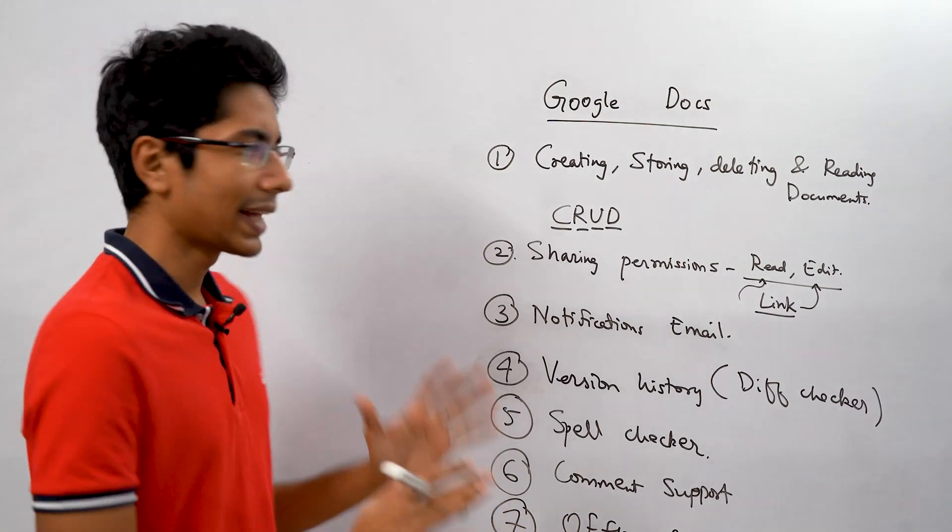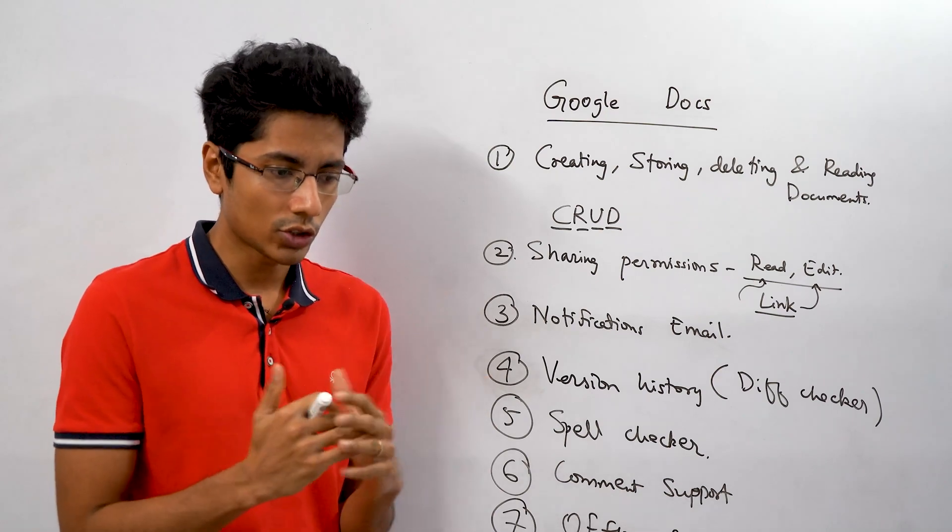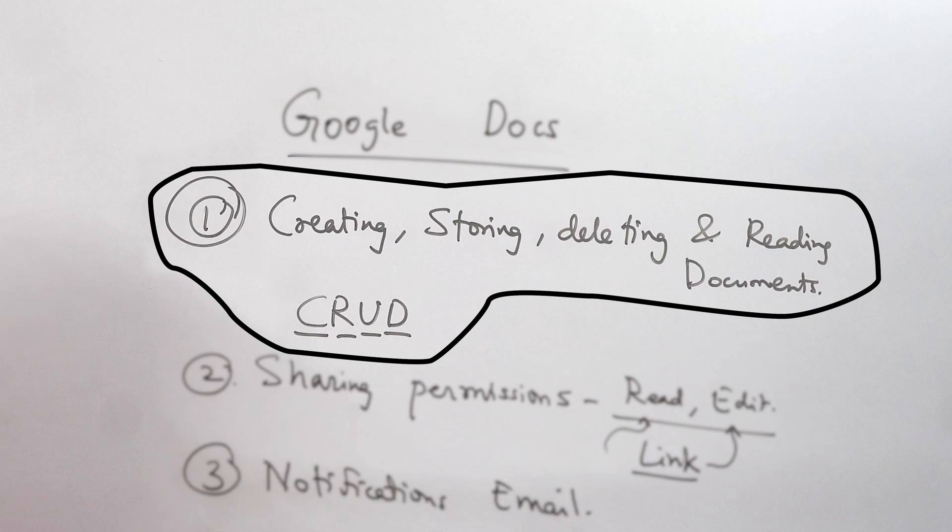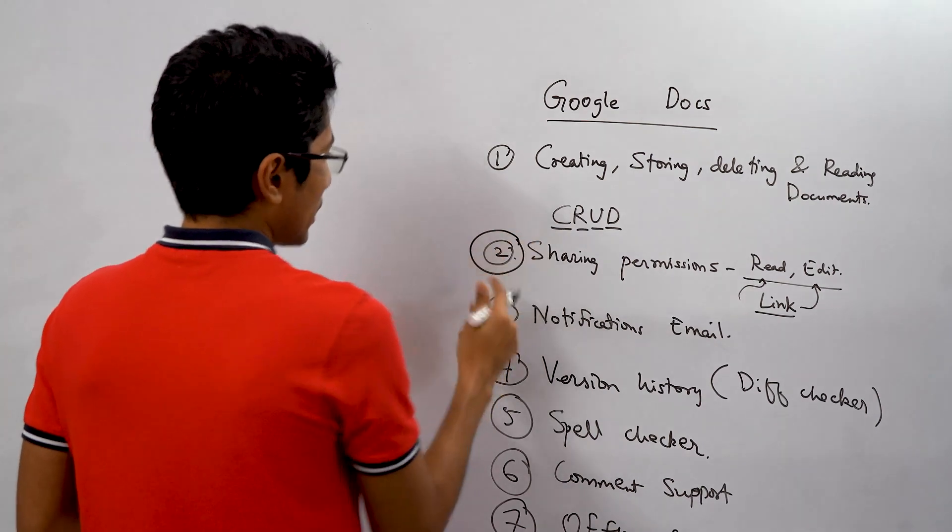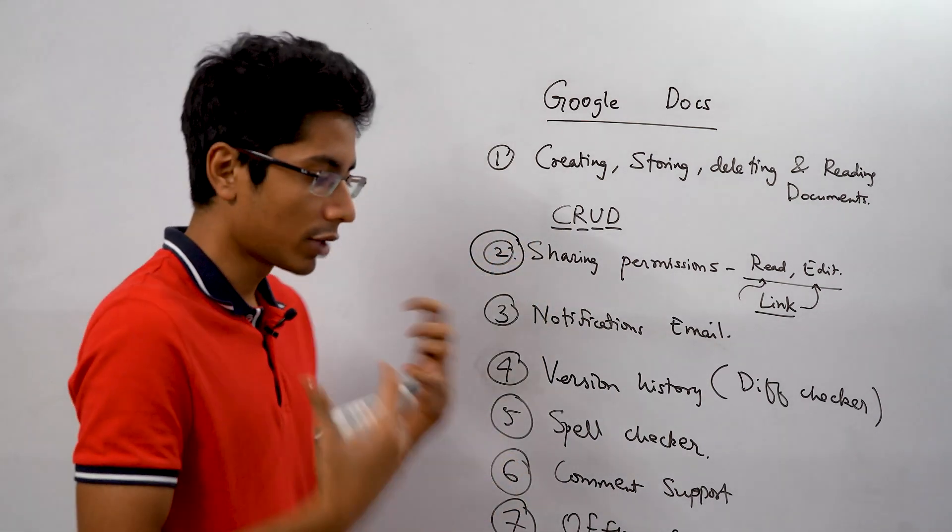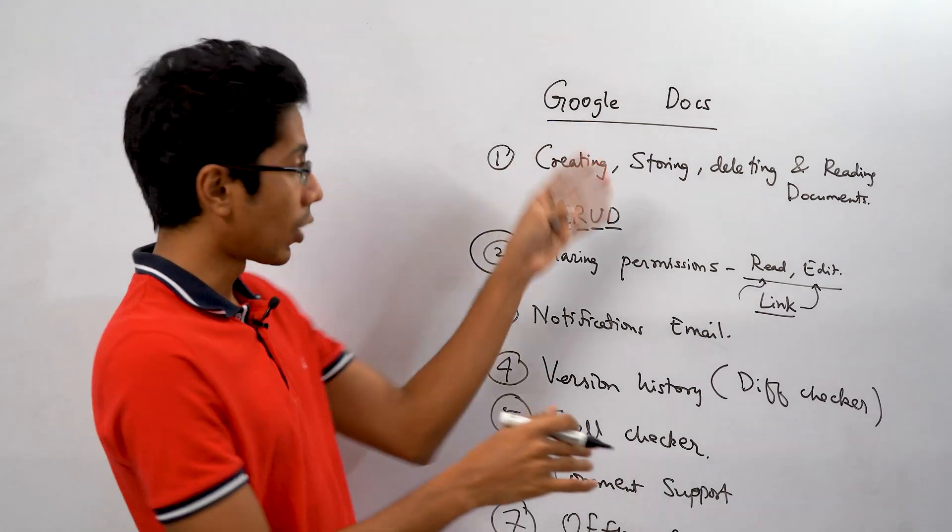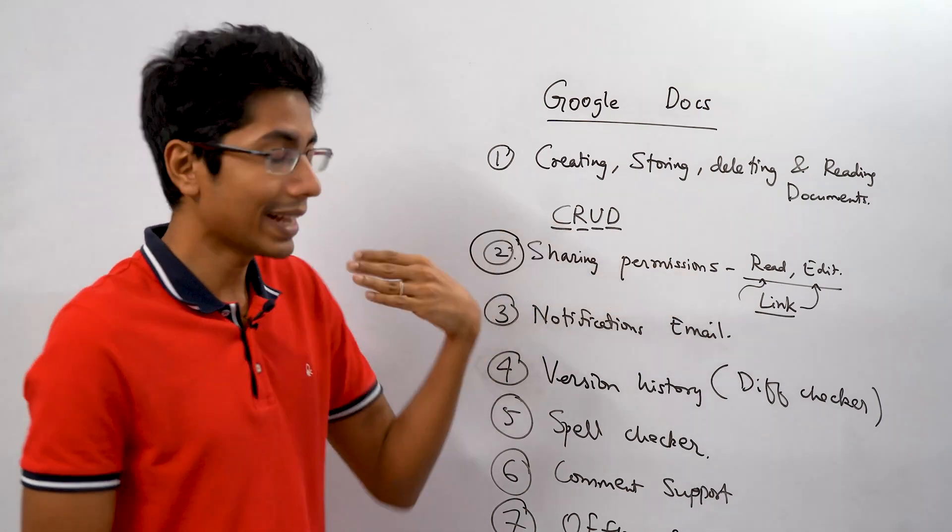So we have seven features with us. I think this is good enough because the core of a Google Docs question, when you're asked this in a system design interview, is storage because a lot of documents are being stored. Point number two is actually really important. We will take this as a core problem that multiple people should be able to read the document, should be able to change things, and people around the world should also be able to see those changes being reflected in real time.